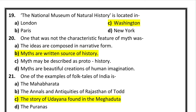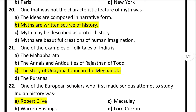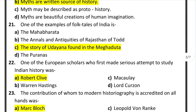Question number 20: one that was not a characteristic feature of myth was — the correct answer is Option B: myths are a written source of history. Myth is not a written source of history; this is not a characteristic of myth. The other three options are characteristics of myth. Question number 21: one of the examples of folk tales of India is the story of Udyana found in Meghduta.